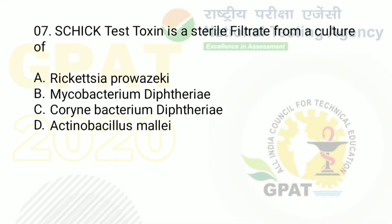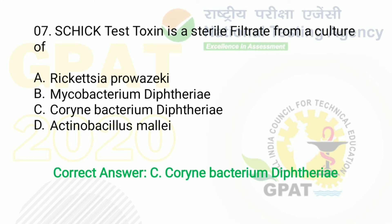Question number 7: the Schick test toxin is a sterile filtrate from a culture of. Option A: Rickettsia prowazekii. Option B: Mycobacterium diphtheriae. Option C: Corynebacterium diphtheriae. Option D: Actinobacillus mallei. The right answer is option C — Corynebacterium diphtheriae.